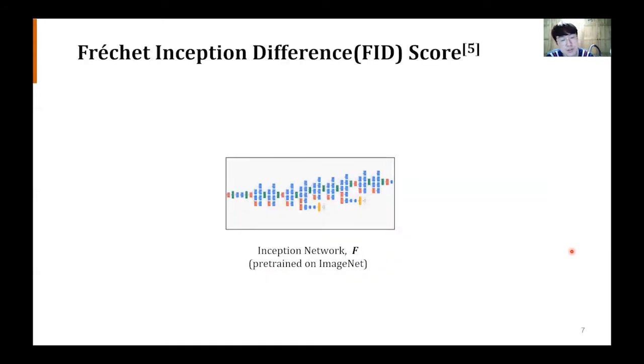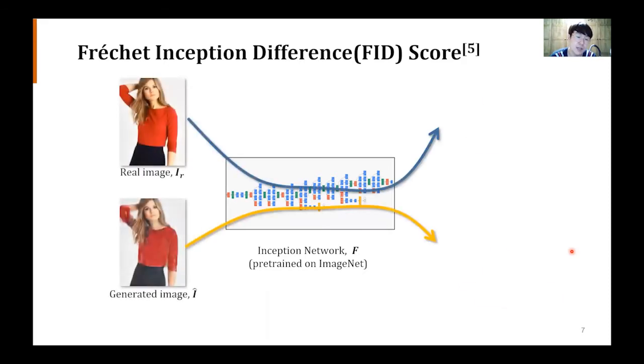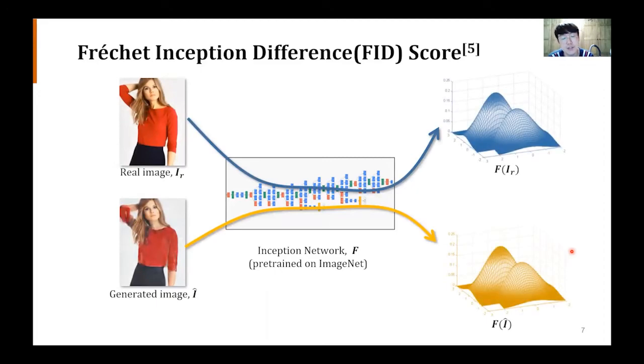Before we introduce the quantitative evaluation, we will briefly explain what the FID score is. FID score is one of the most popular metrics for evaluating generative models. Using inception network pre-trained on the ImageNet dataset, the method extracts the features of ground truth image and generated images and statistically compares them. If the distance is large, we can consider the generated image doesn't have important features used by humans or machines for understanding images.